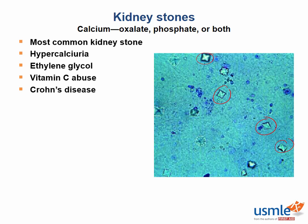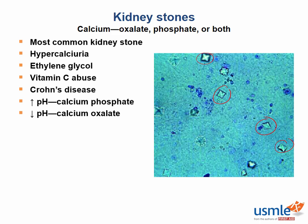It's helpful to remember that calcium phosphate precipitates in increased pH, and calcium oxalate precipitates in decreased pH. Treatments include thiazides, which reduce calcium excretion, and citrate, which binds to calcium to prevent its precipitation in the urine. Both calcium phosphate and calcium oxalate stones are radio-opaque, so they are easily seen on x-ray or CT.